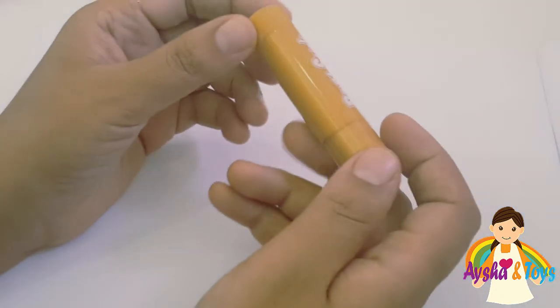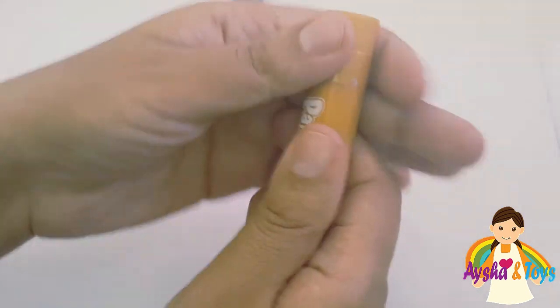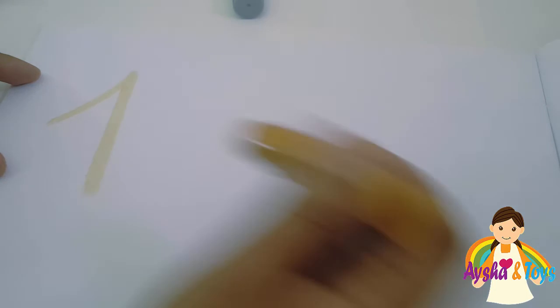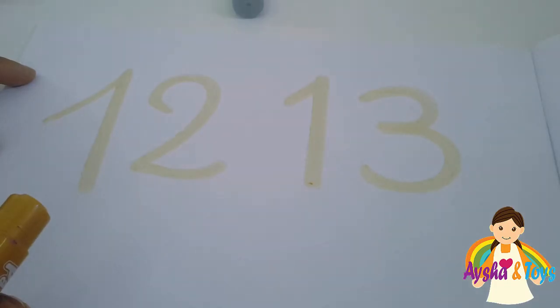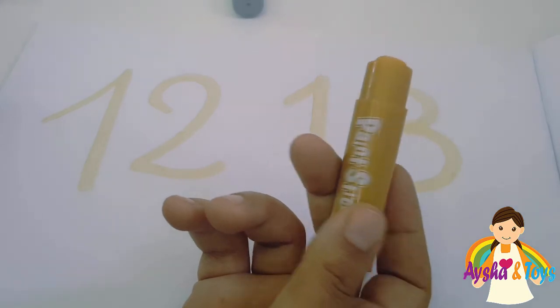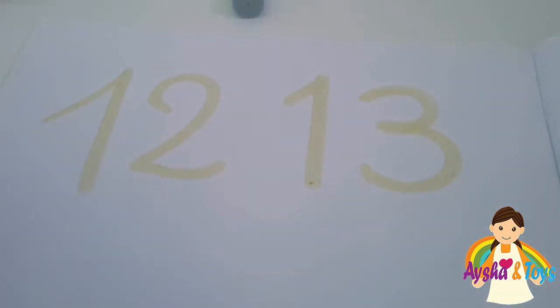This one is golden color. I love golden. We'll write. Twelve. Golden is a special color. Twelve. Thirteen. The golden is more beautiful. Golden is a beautiful color.